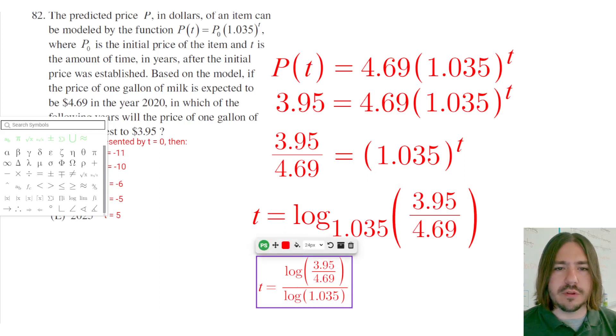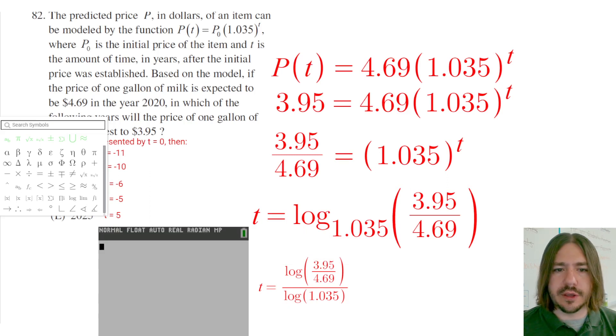So now this is something you can go ahead and type into the calculator. So I'm going to go ahead and pull up my calculator here. So we want to go ahead and type that in. We've got log of $3.95 divided by $4.69, and that's going to be my numerator. And so I'm going to divide by log of 1.035, which basically means that the item is increasing in price by 3.5% each year. So I get really close to negative 4.99. That's really close to negative 5.